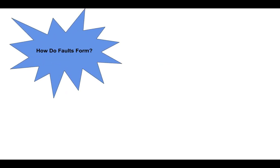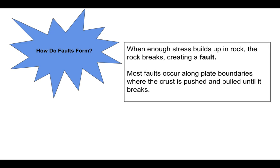How do faults form? When enough stress builds up in a rock, the rock breaks, creating a fault. Another name for a fault would just be a massive crack in the bedrock. Most faults occur along plate boundaries, where the crust is pushed and pulled until it breaks.